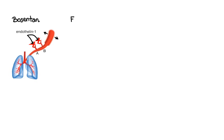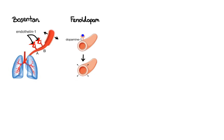Next we have fenoldopam, which is a selective dopamine-1 receptor agonist. The dopamine-1 receptors are located on the smooth muscle cells in the peripheral vasculature as well as the renal, coronary, cerebral and mesenteric arteries. By stimulating dopamine-1 receptors, fenoldopam produces generalized arterial vasodilation which leads to decreased peripheral resistance and thus lower blood pressure. Additionally, fenoldopam inhibits tubular sodium reabsorption which results in natriuresis and diuresis. Due to its rapid onset and short duration of action, fenoldopam is often used in hospitals for short-term management of severe hypertension.